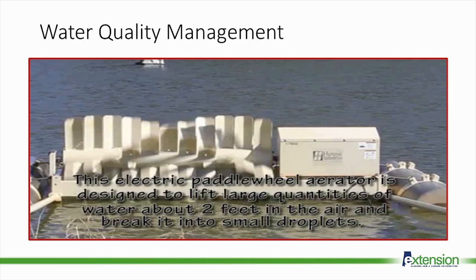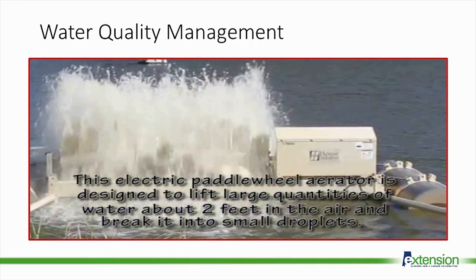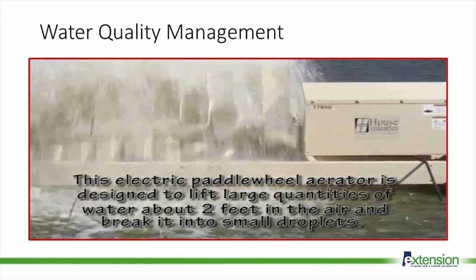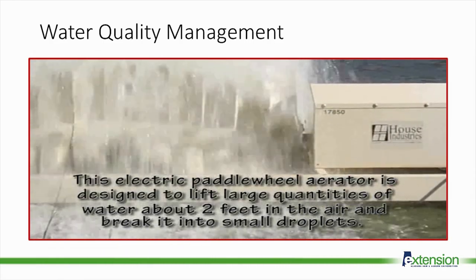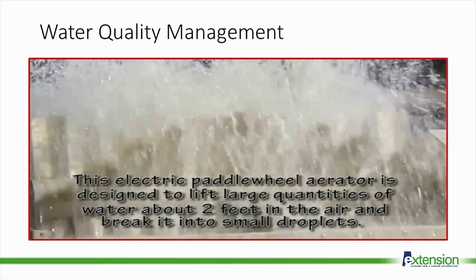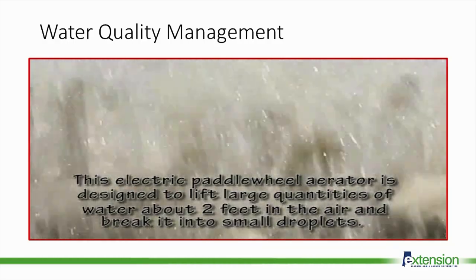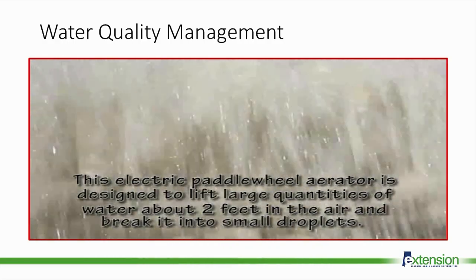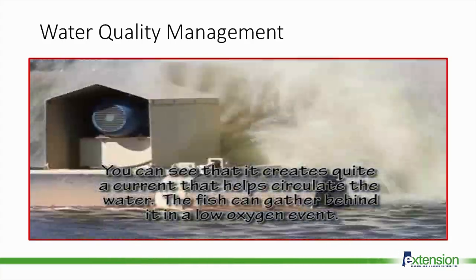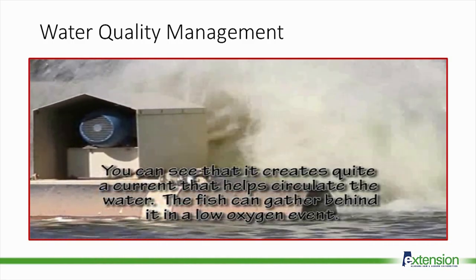This electric paddle wheel aerator is designed to lift large quantities of water about two feet into the air and break it into small droplets. Breaking the water into small droplets creates a large surface area and makes it easy for oxygen from the surrounding air to diffuse into the water. It creates quite a current that helps circulate the water and oxygen. Fish will often line up behind one of these aerators during a low oxygen event.